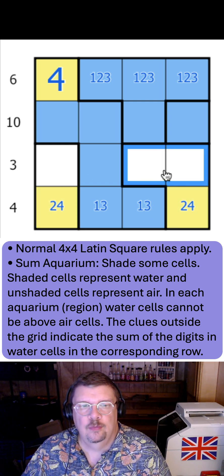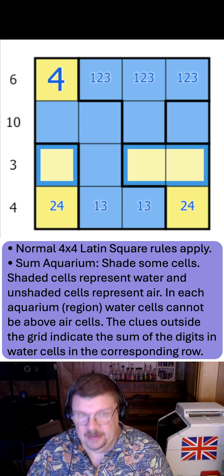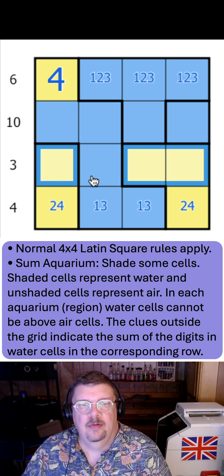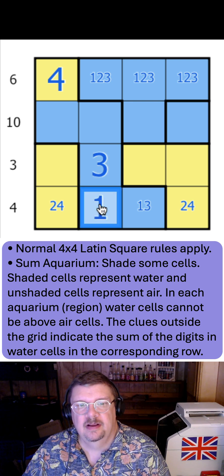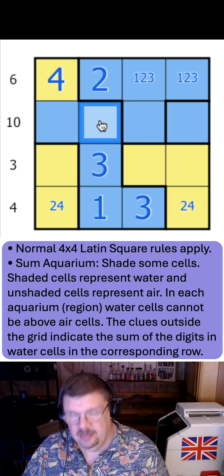That makes these air and 2 and 4. If these are air, water can't be above air, so they must be air. And now this is the only water digit, so that has to be a 3. That gives me a 1 there and a 3 there. That's a 2. That's a 4.